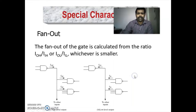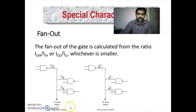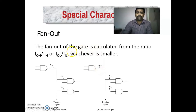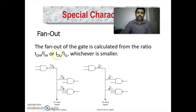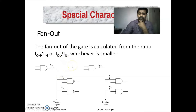Fan-out of a gate is calculated from the ratio of IOH divided by IIH for high-level input. For low-level output, the fan-out is IOL divided by IIL. IOH represents high-level output current and IOL represents the low-level output current.